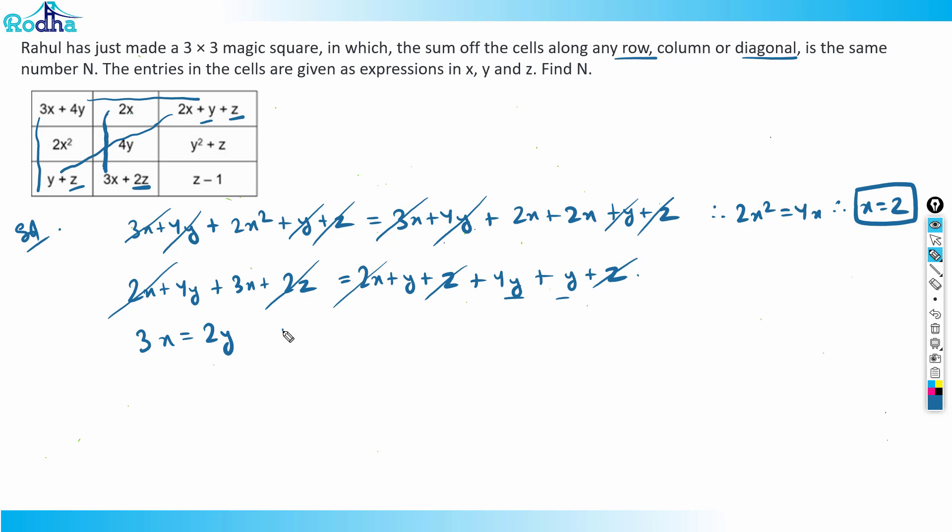So in that case, we already have got x equal to 2. So I'll be putting x as 2 here. So I'm getting y equal to 3. So that means I'll be getting y equal to 3.